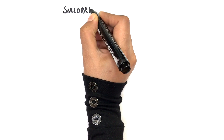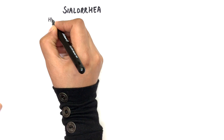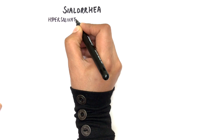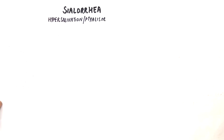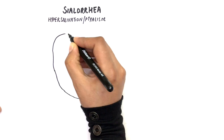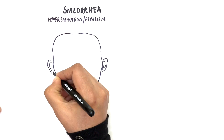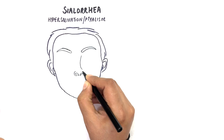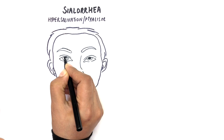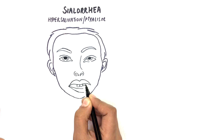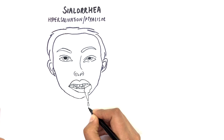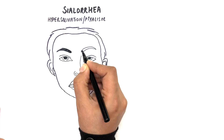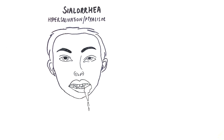Today's video is about sialorrhea. Sialorrhea, or hypersalivation, also called ptialism, is an excessive production or presence of saliva in the oral cavity that may cause unintentional loss of saliva from the mouth, or drooling of a person.